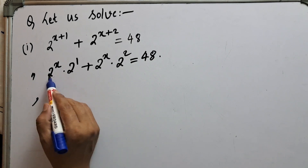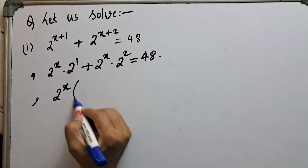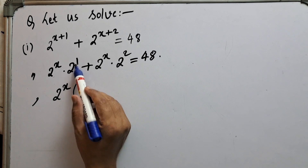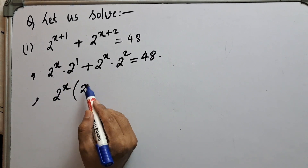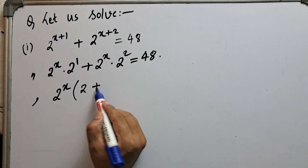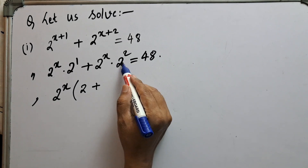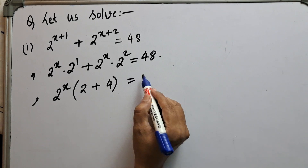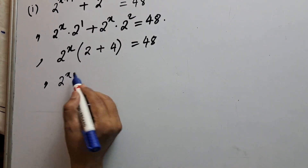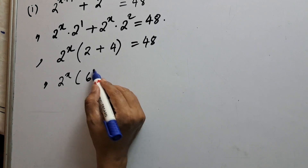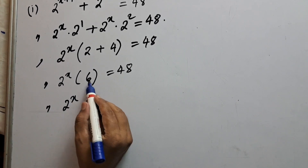We have 2 to the power x appearing in both terms, so let's take 2 to the power x as common. Within the bracket, 2 to the power 1 remains, which is 2, plus 2 to the power 2 remains, which is 4. So we get 2 to the power x times (2 plus 4) equal to 48, or 2 to the power x times 6 equal to 48.